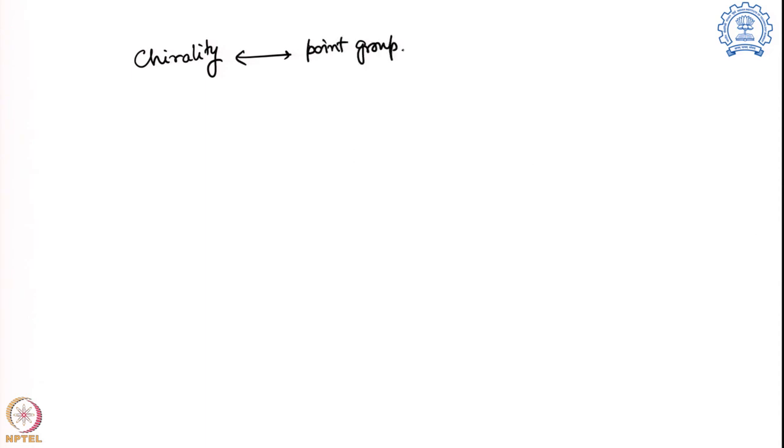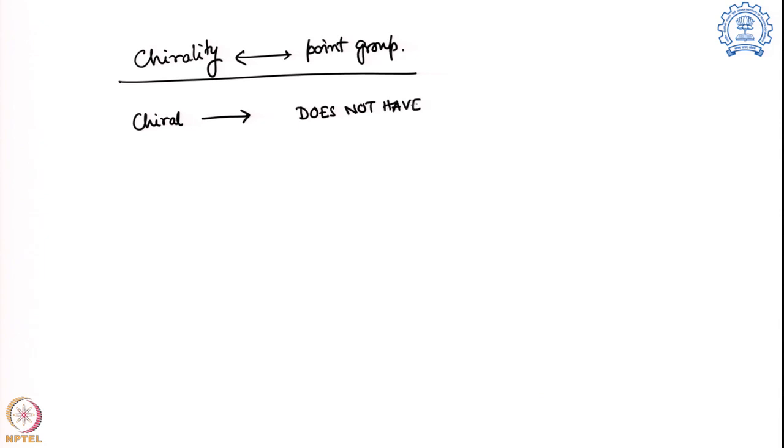Welcome to this new segment of CD Spectroscopy and MOSBAR Spectroscopy for Chemists. My name is Arnab Datta and I am an associate professor in the Department of Chemistry at IIT Bombay. In the previous segment we discussed the relationship between chirality and symmetry. Let me refresh your memory a little bit about chirality and point groups. The take-home message was: a molecule can be chiral if it does not have any SN axis.